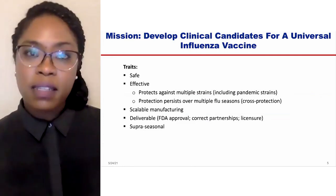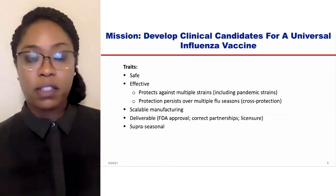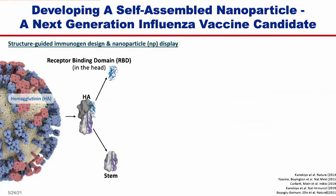Now I'll go into the basic science that helps us develop such a candidate. We have been since 2008 developing a body of work leading to a self-assembling nanoparticle, which forms a next-generation influenza vaccine candidate. Influenza has a molecule on its surface called hemagglutinin — it's the H when you hear about H1N1. That hemagglutinin molecule has two regions: a head and a stem. The head has a receptor binding domain, an RBD, that interacts with sialic acid on target cells — red blood cells are a good example.